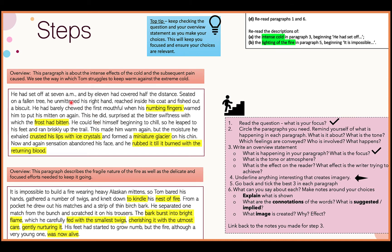This idea of 'fishing out a biscuit' is imagery and stands out as unusual. Initially I thought I'd choose it, but then I went back to the question — it says descriptions of the intense cold in paragraph three. That phrase isn't about the intense cold, so I decided not to choose it and kept looking for examples related to the intense cold.